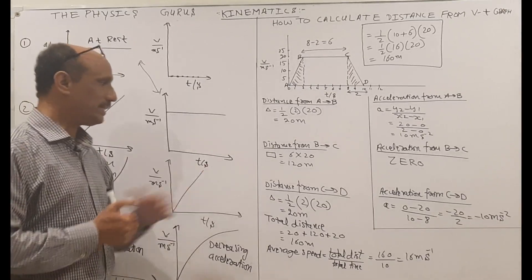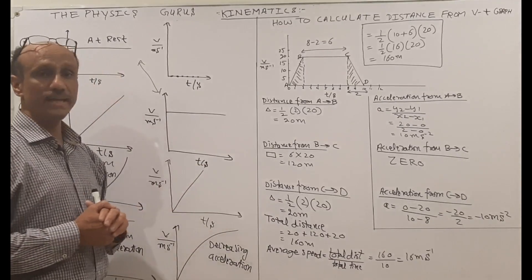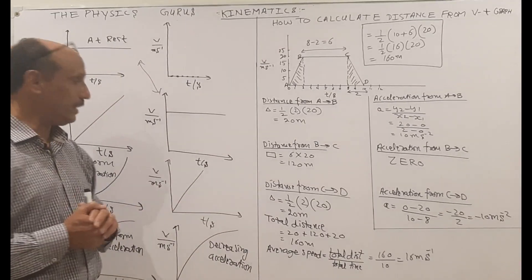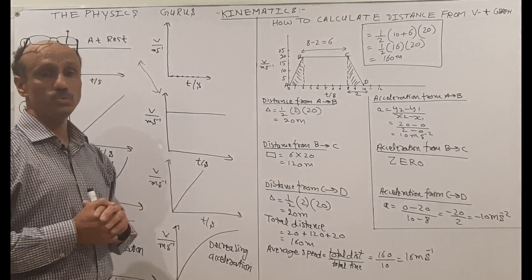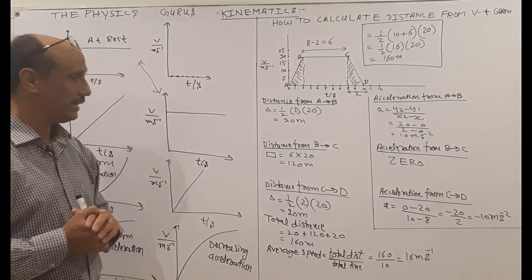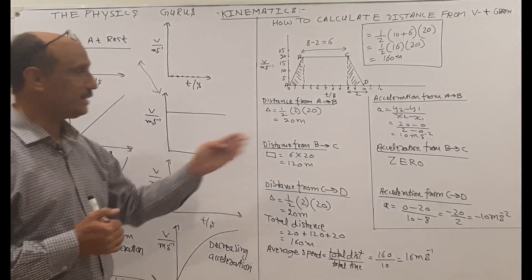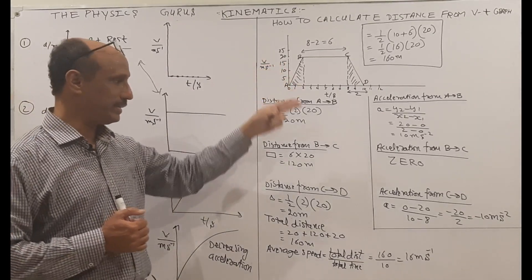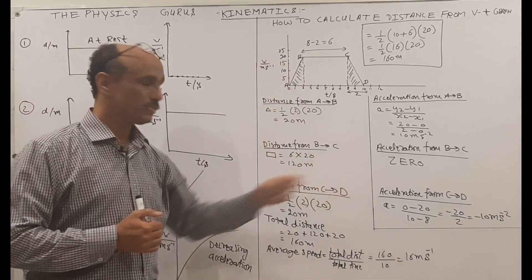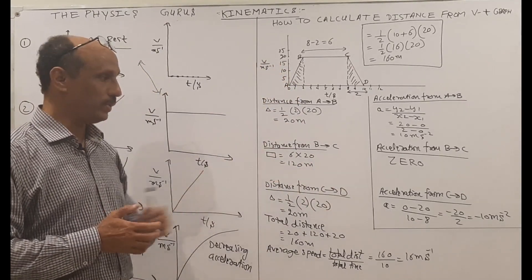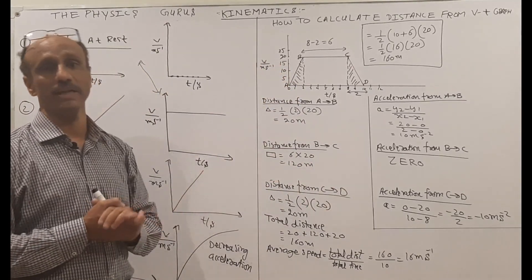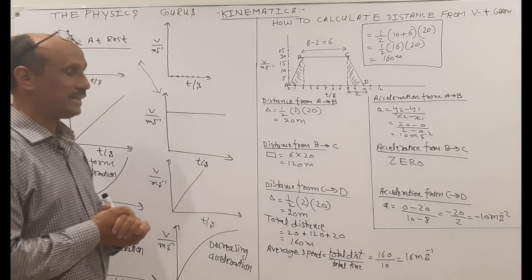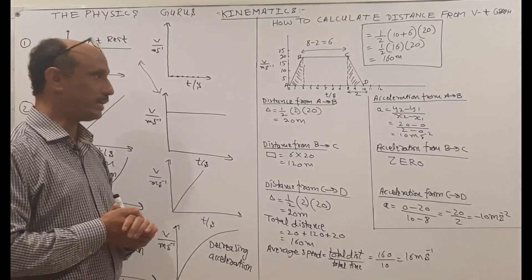The distance from C to D is again a triangle shape, giving 20 meters. Here the speed is decreasing, so this is deceleration. Applying the same gradient formula but now the result is on the negative side, so the acceleration is −10 meters per second squared.